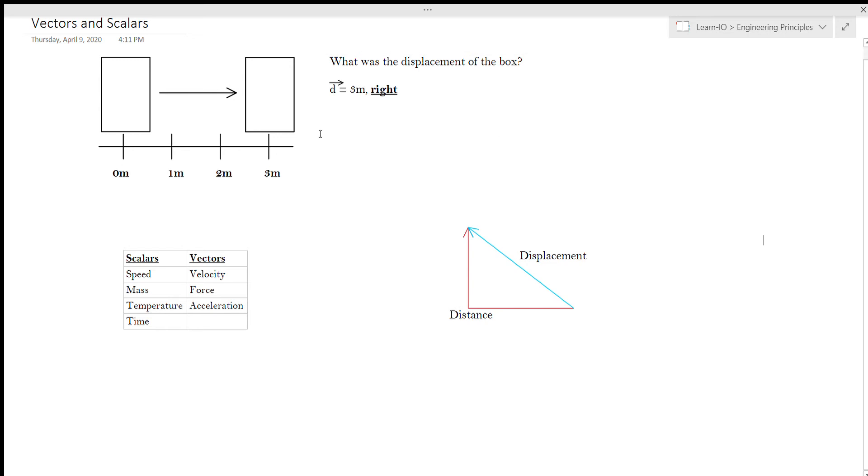So let's look at an example here to kind of understand what I'm talking about. So over here we have a simple nondescript box that starts off at the zero meter mark of our world. And by the end of the problem, it ends up at the three meter mark of our world. So the question's asking us what the displacement of the box is.